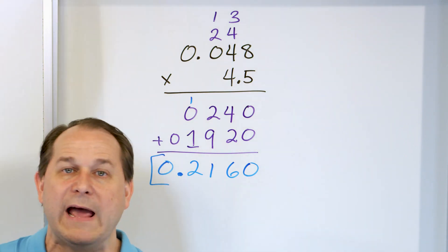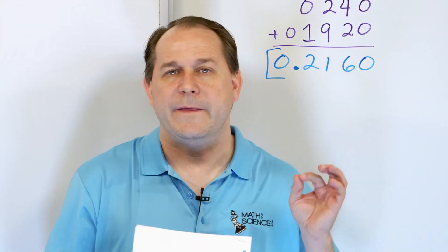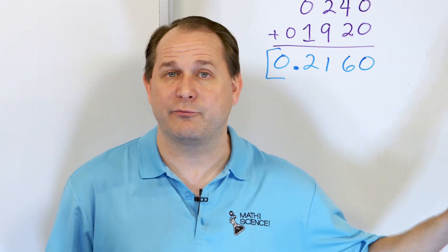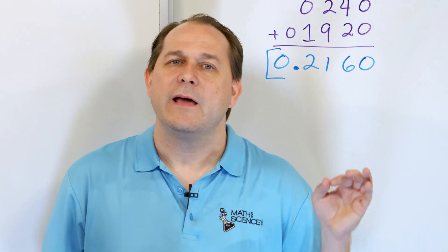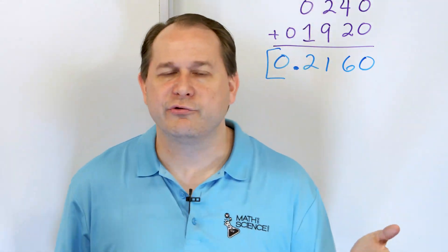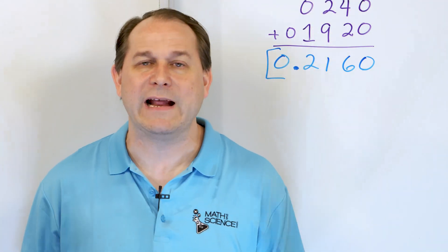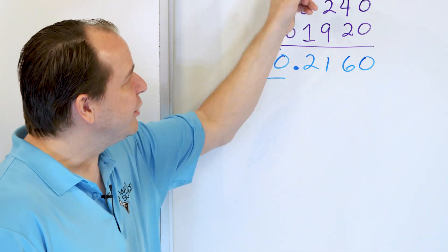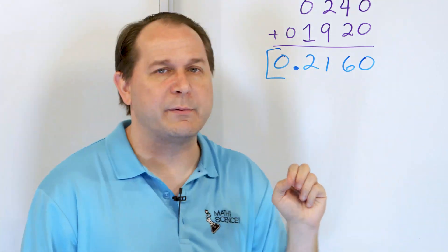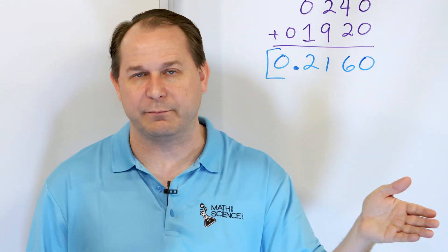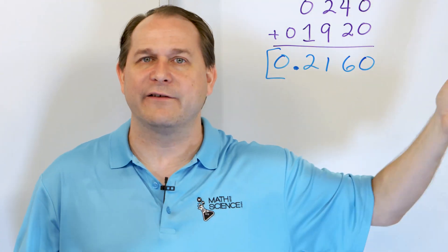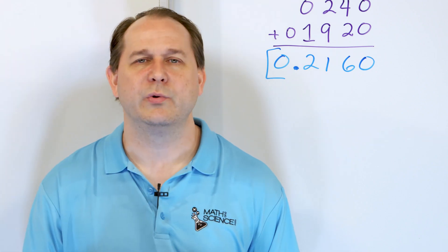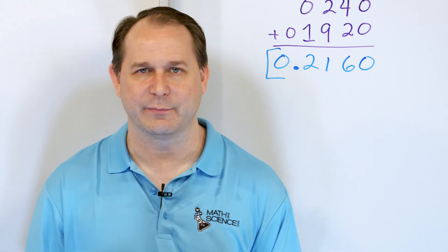So here we have conquered the idea of multiplying decimals. The number one thing you need to know is that you do not line up the decimal points — you do that when you add or subtract, but not when you multiply. Line up the numbers as usual, completely ignore the decimal point, and multiply as if it isn't even there. Then count the total decimal digits in the problem and drop the decimal point into the correct position in your answer. Practice all of these yourself and follow along to part 2, where we will continue practicing multiplying decimals.